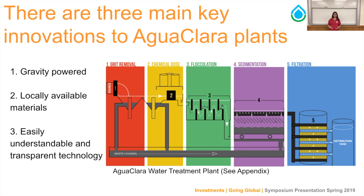The Aguaclara water treatment plant has five different stages: grit removal, chemical dose, flocculation, sedimentation, and filtration. There are three main key innovations: first, the plant is gravity powered, meaning it does not require electricity to run. Second, the materials to build these plants are all locally available, so countries don't need to outsource materials. Third, the water treatment technology is easily accessible — communities simply input the flow rate and dimensions to get detailed documentation on how to construct the plants.